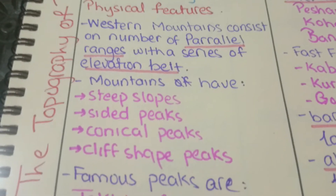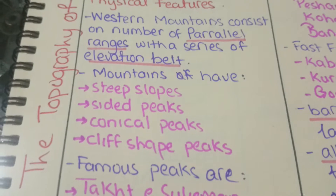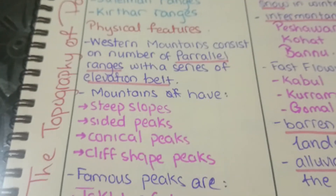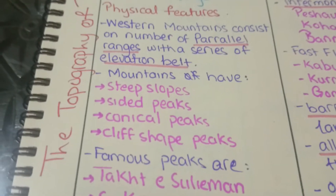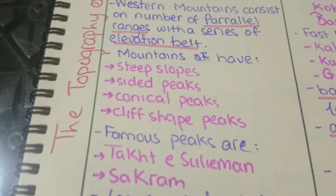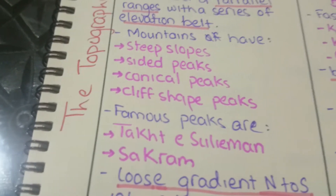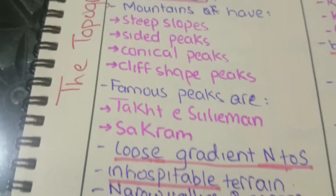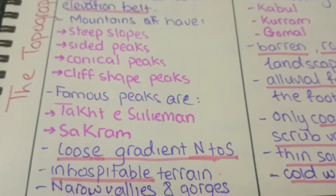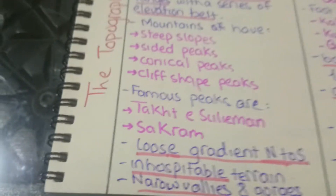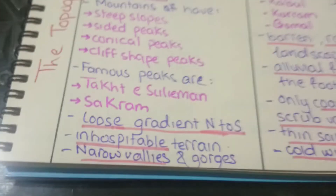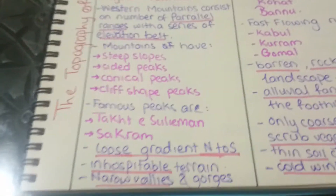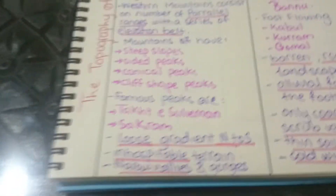Physical features of the Western Mountains consist of a number of parallel ranges and series of elevation belts. The mountains have steep slopes, sharp-sided peaks, conical peaks, and cliff-shaped peaks. Famous peaks are Takhtar Suleiman and Sakram. They lose gradient from north to south and have inhospitable terrain, narrow valleys, and gorges.